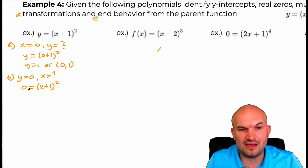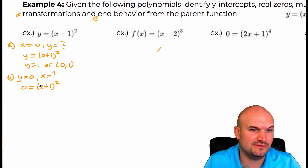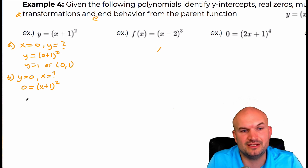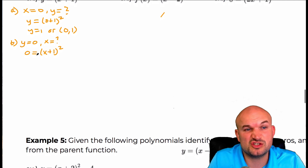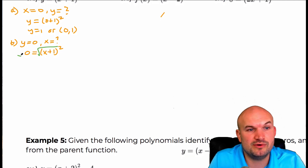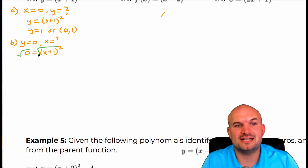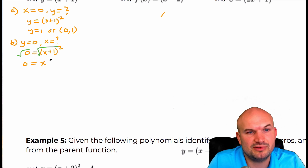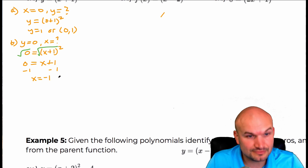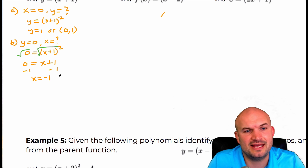Rather than expanding this, all I'm simply going to do is use the square root method and take the square root of both sides. Zero is not positive or negative, so I don't need to worry about the plus or minus. Therefore, it's just going to be zero equals x plus one. Subtract one from both sides: x is equal to negative one is the x-intercept, or we represent that as the coordinate point negative one comma zero.